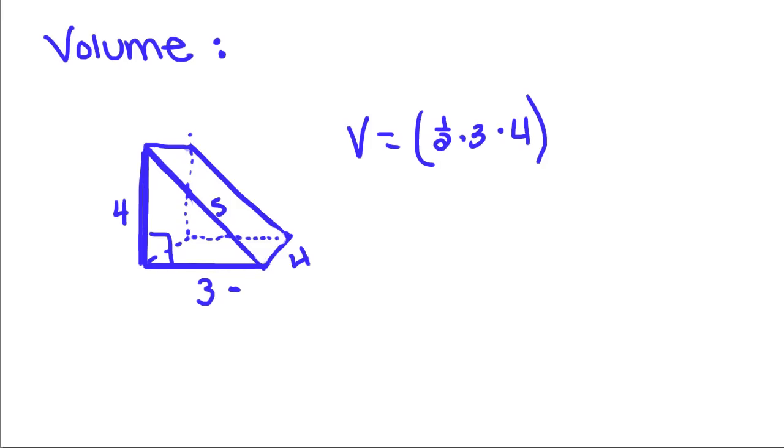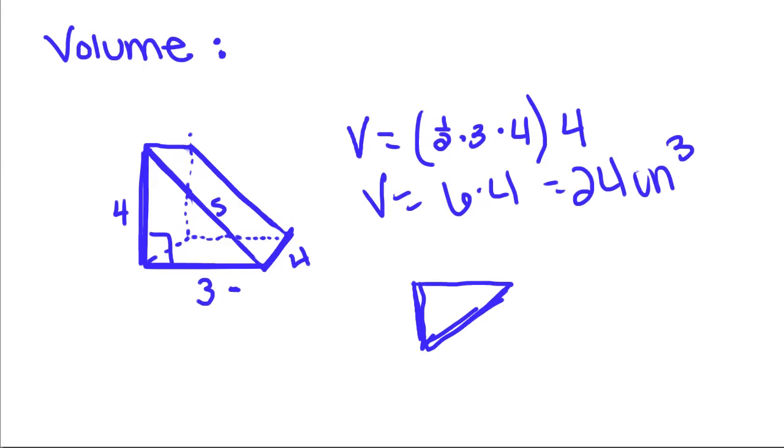If you were thinking about this as this triangle being the base and this triangle sitting on the ground like that, its height would be this 4 that's right here. So V is equal, 1/2 times 4 is 2, 2 times 3 is 6, times 4 is 24, so 24 units cubed.